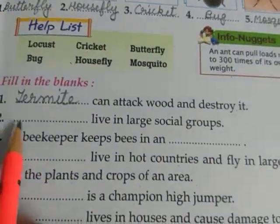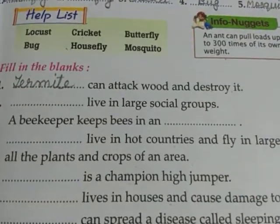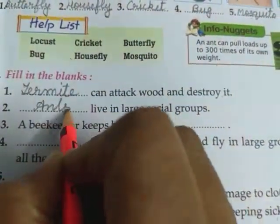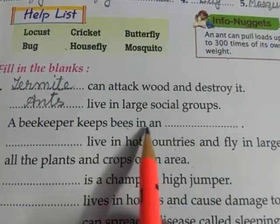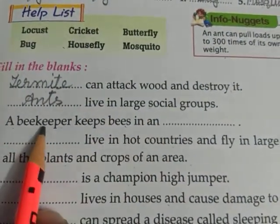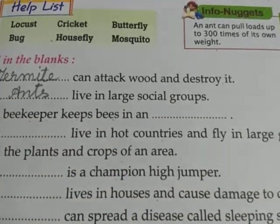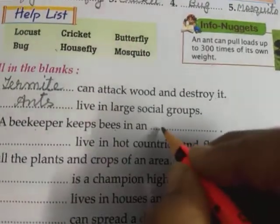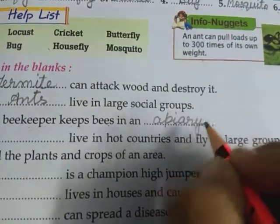Second blank: live in large social groups — that is ants. Third blank: a beekeeper keeps bees in a blank — the beekeeper who keeps honeybees keeps them in an apiary. That is apiary. A-P-I-A-R-Y.